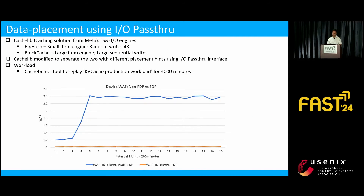The third experiment demonstrates data placement using this interface. We used CacheLib, the open-source caching solution from Meta, which internally has two IO engines: Big Hash, a small-item engine with random small writes, and Block Cache, a large-item engine with mostly sequential writes. CacheLib was modified to separate these two write streams with different placement IDs using the IO pass-through interface. We then ran the cache-bench tool to replay a KV cache production workload and examined the Write Amplification Factor. Without FDP, the WAF goes up to 2.4. With FDP, it remains close to 1 throughout, demonstrating the flexibility of the interface.